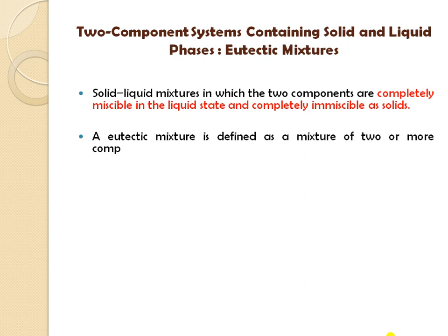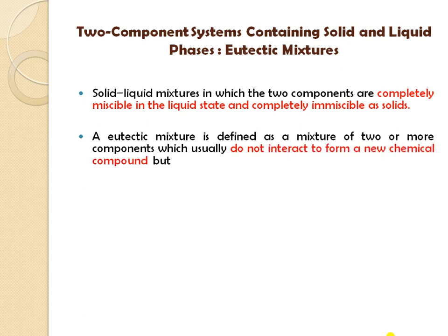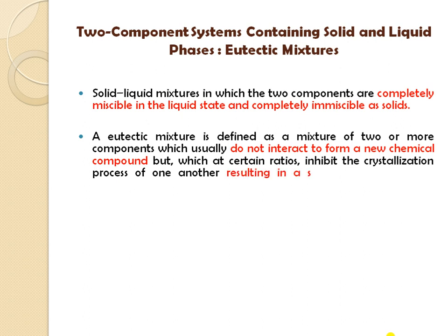A eutectic mixture is defined as a mixture of two or more components which usually do not interact to form new chemical compounds, but which at certain ratios inhibit the crystallization process of one another, resulting in the lowering of the melting point. When you mix these components with each other, the melting point of each individual component gets reduced because of the presence of the second component.